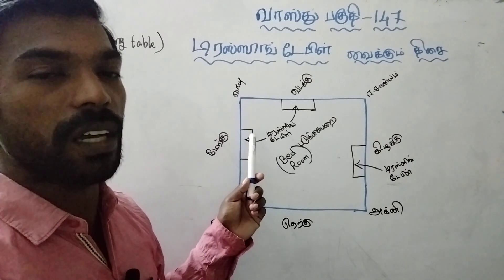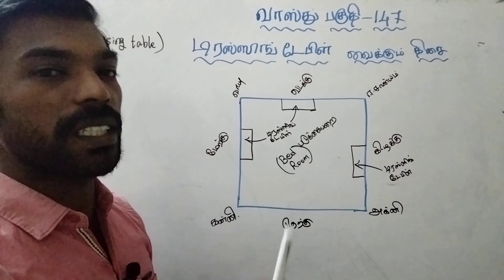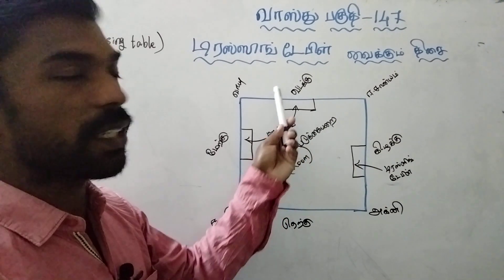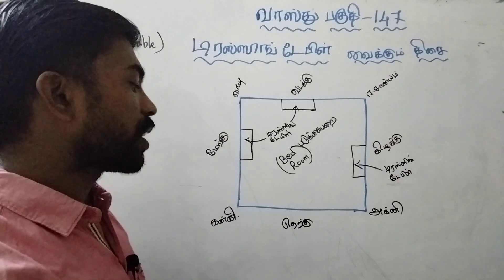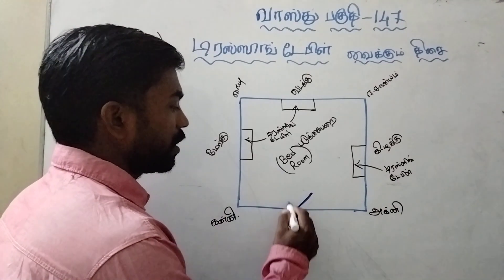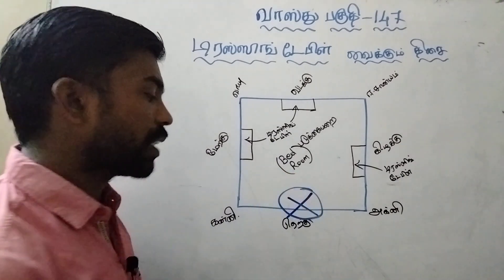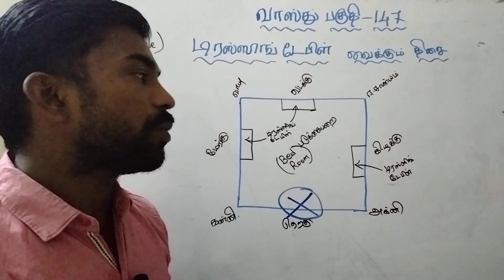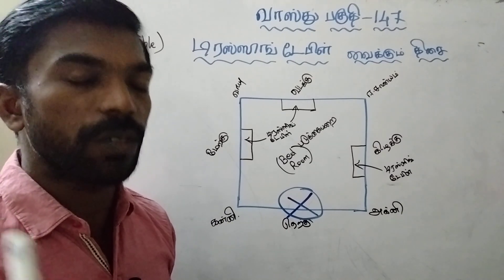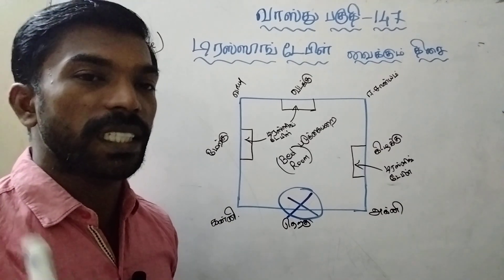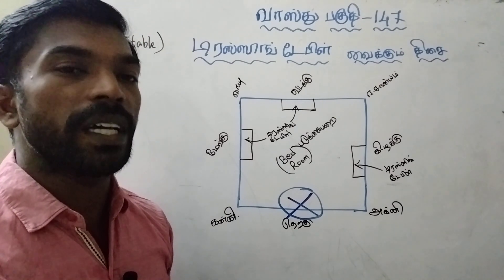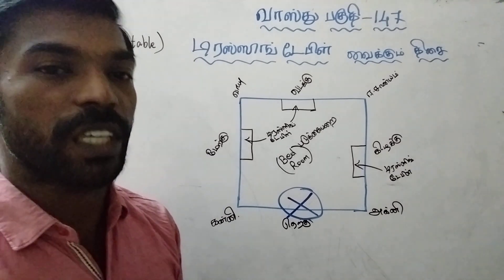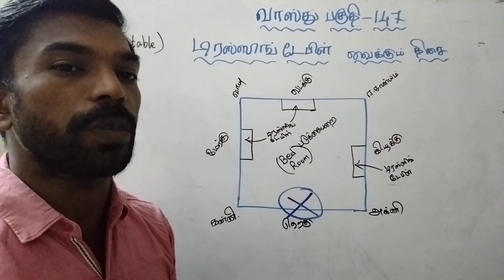This is the dressing table. In your bedroom, considering the direction or face of the room — the first, second, and third directions — you will be able to place it correctly. In your bedroom, you will be able to position it properly according to Vastu guidelines.